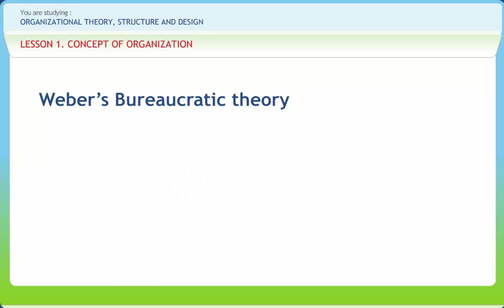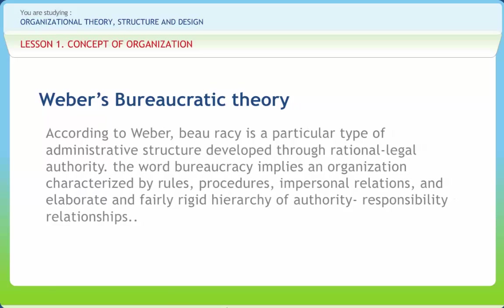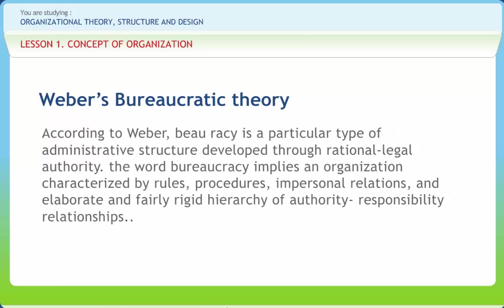Next is Weber's bureaucratic theory. Bureaucracy implies an organization characterized by rules, procedures, impersonal relations, and an elaborate and fairly rigid hierarchy of authority and responsibility relationships. According to Weber, bureaucracy is a particular type of administrative structure developed to rational legal authority. Weber provided a number of features of bureaucratic structure: hierarchy, division of work, rules, regulations and procedures, records, impersonal relationships, and administrative class.